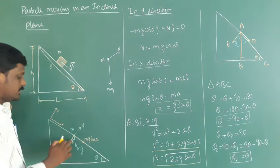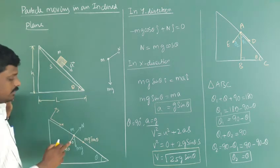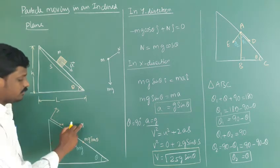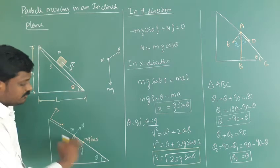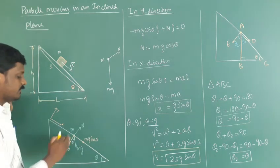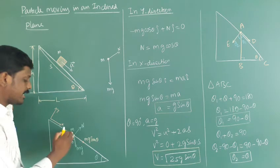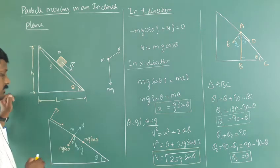The mass is considered as a point mass. The forces are the normal force exerted by the inclined surface and the gravitational force acting downward.